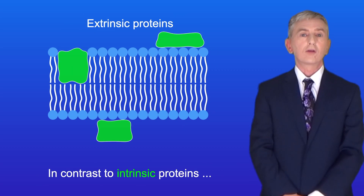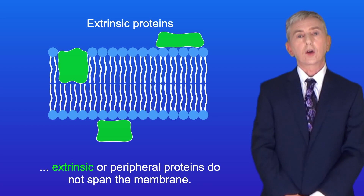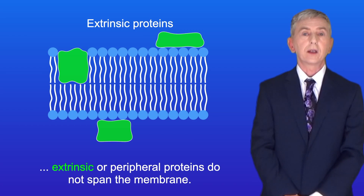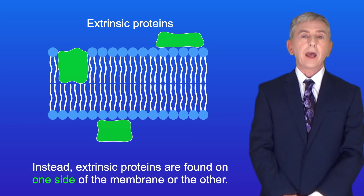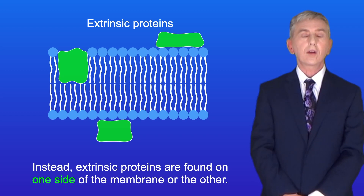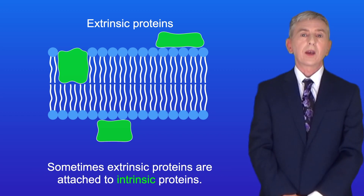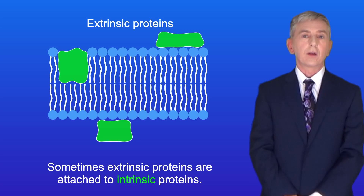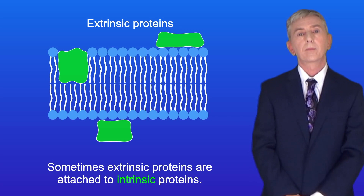In contrast to intrinsic proteins, extrinsic or peripheral proteins do not span the membrane. Instead, extrinsic proteins are found on one side of the membrane or the other, and sometimes extrinsic proteins are attached to intrinsic proteins.